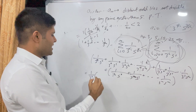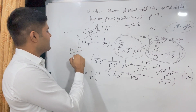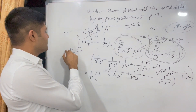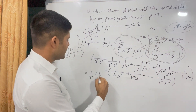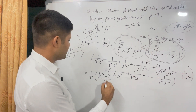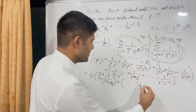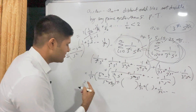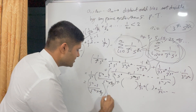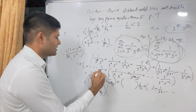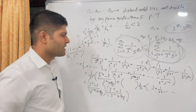That geometric sum simplifies to (5^n − 1)/(4 · 5^(n−1)). The same term appears multiplied by 1/3, then 1/3², and so on. So we factor out (5^n − 1)/(4 · 5^(n−1)) and multiply it by the sum 1 + 1/3 + 1/3² + ... which similarly gives (3^n − 1)/(2 · 3^(n−1)).